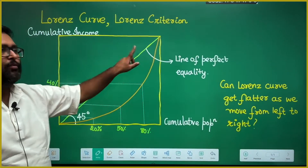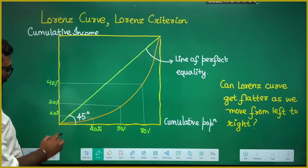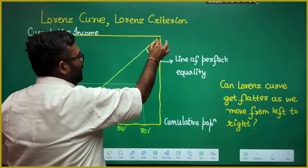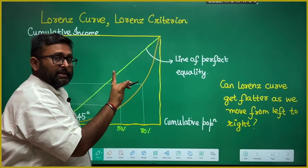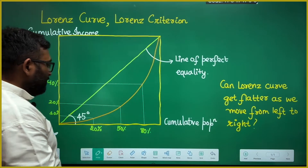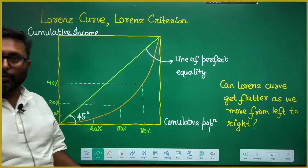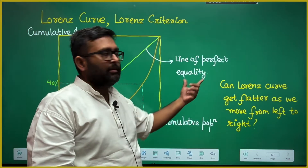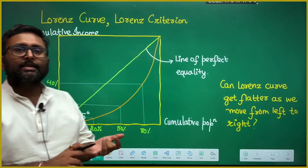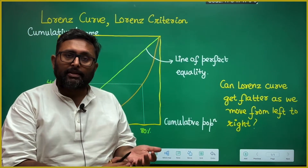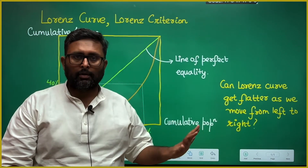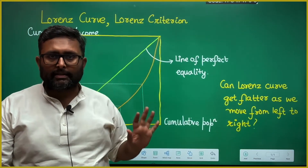If you look at this 45-degree line, it is going to start from the point where 0% of the population is earning 0% of income, and it is going to end where 100% of the population is earning 100% of income. If everybody were earning the same amount of income, then this 45-degree line is going to be the Lorenz curve — this is the line of perfect equality. So 10% of the population earns 10% of income, 50% earns 50%, and so on. That is perfect equality; there is no inequality in this country.